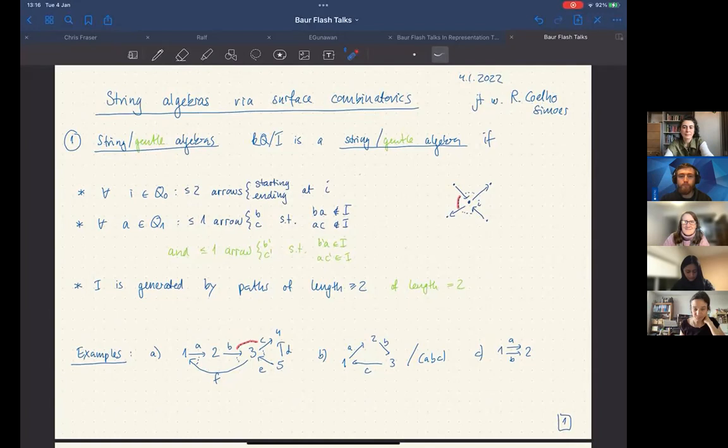Let me briefly recall what a string or gentle algebra is, so I'm going to do that in one definition. I start with a quiver Q and an algebraically closed field k, and I take kQ mod I, so some relations.